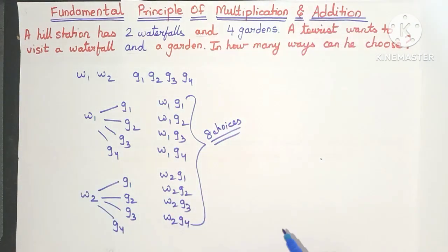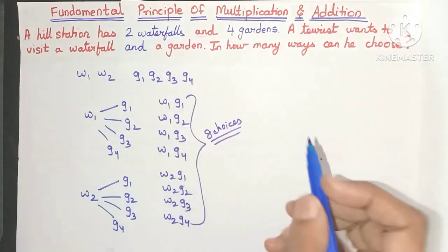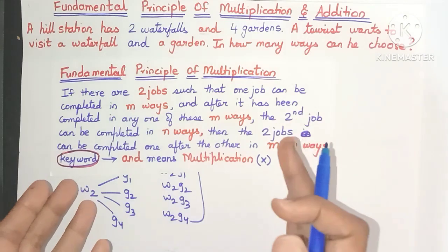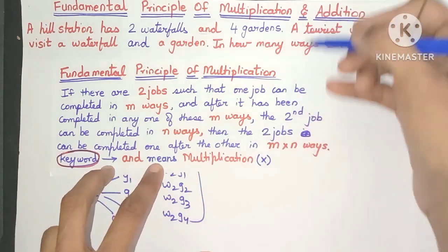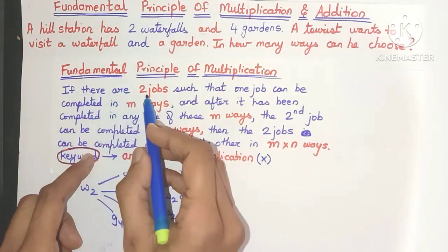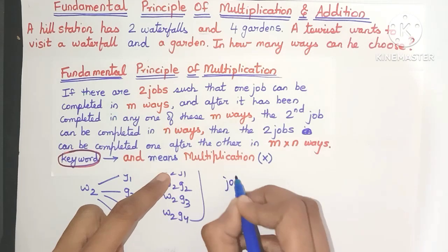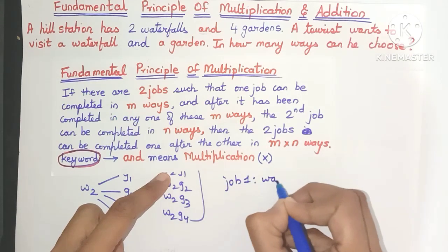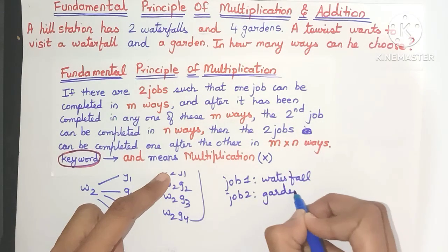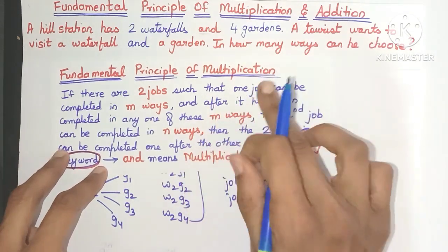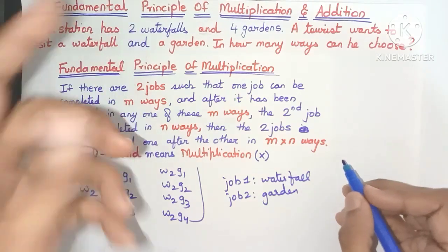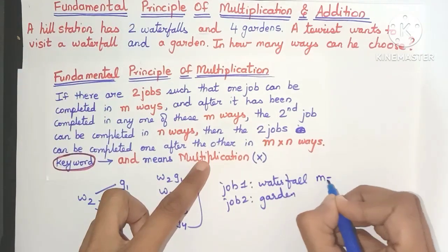What we have just demonstrated is also known as the fundamental principle of multiplication. This is the statement of the multiplication principle. If there are two jobs — here also we have two jobs — the first job is visiting the waterfall, and the second job is visiting the garden. One job can be completed in M ways; visiting the waterfall can be completed in two ways because there are two waterfalls, so M is two.